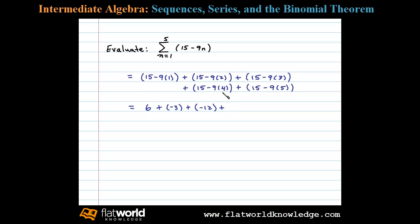Plus 15 minus 36 is negative 21, and then plus 15 minus 45 is negative 30. Now adding these numbers together, we're left with negative 60, and that's the sum.